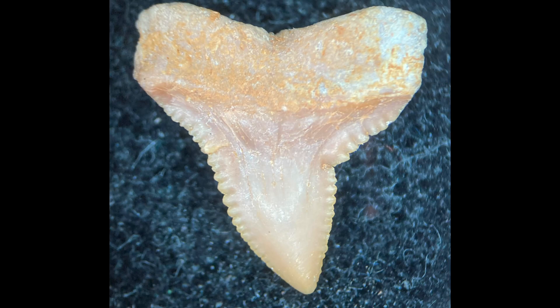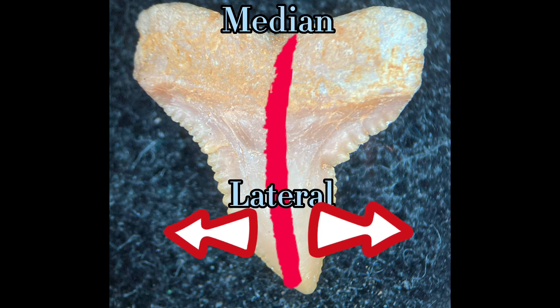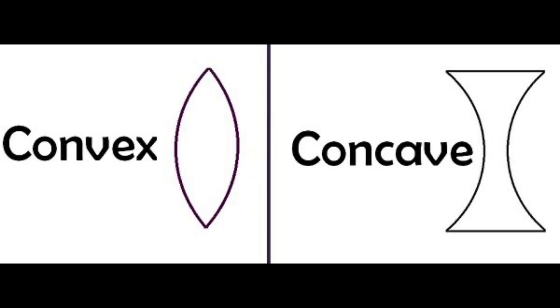Other terms that often get used to describe placement of characteristics on a tooth include median, which refers to the middle of the tooth; lateral, which refers to the sides of the tooth; and marginal, which refers to the edges of the tooth. Convexity and concavity are important terms to get used to as well — if something is convex, it curves outwards, and if something is concave, it curves inwards.